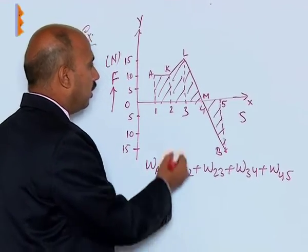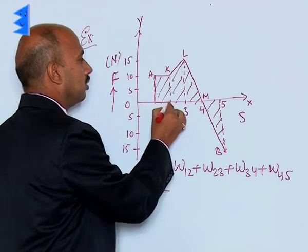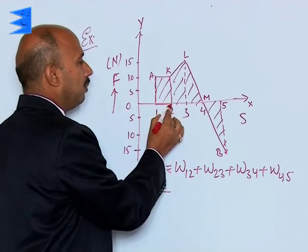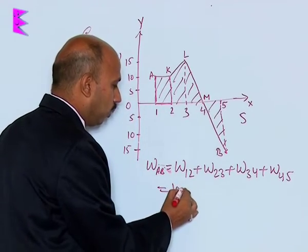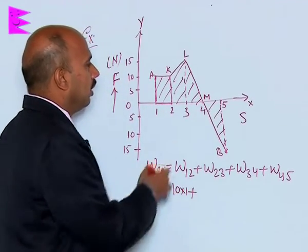Here work done 1 to 2, this is the area of the rectangle. Here we can take this is 1 meter and this is 10. So area is 10 into 1.